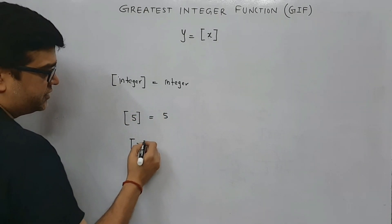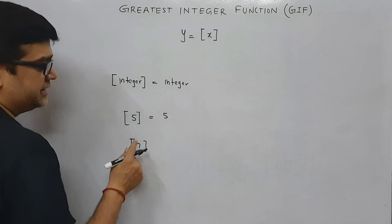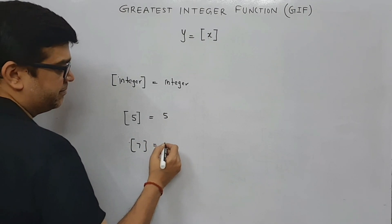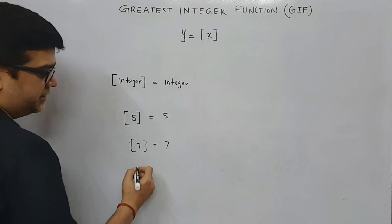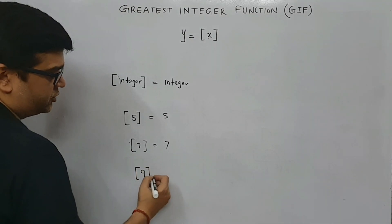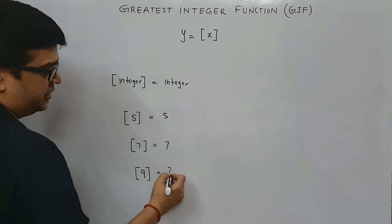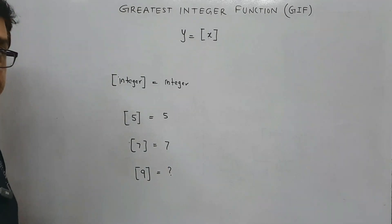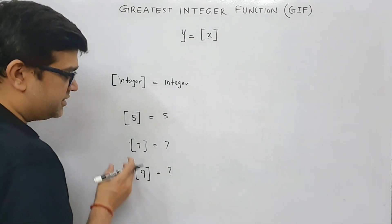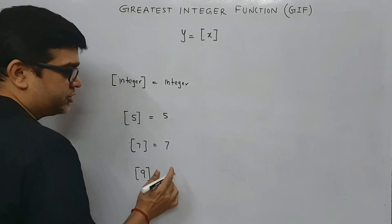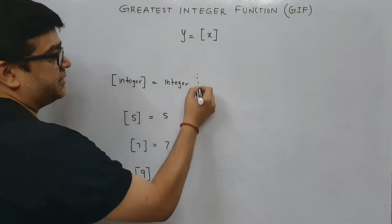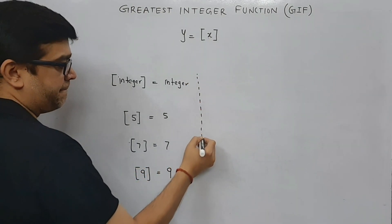Box of seven — seven is an integer, so box of seven will simply be seven. Can you guess what box of nine will be? Yes, your answer is right: since nine is an integer, box of nine is going to be nine.